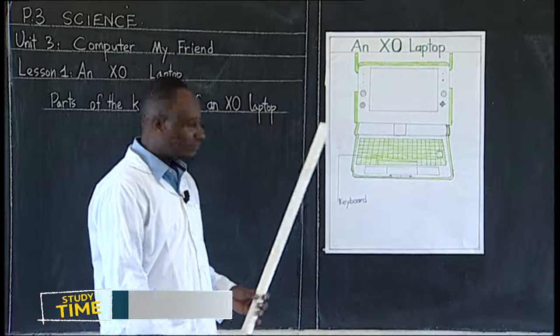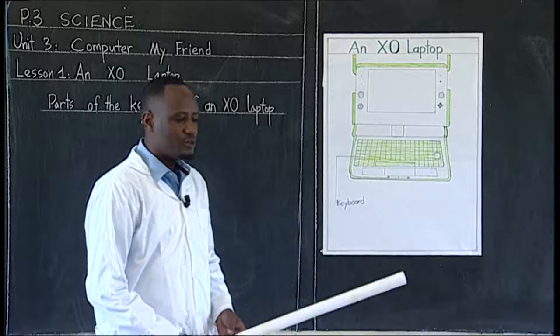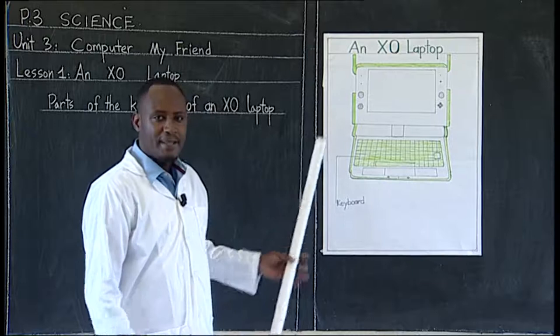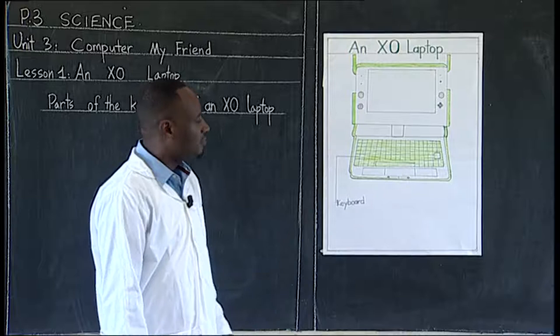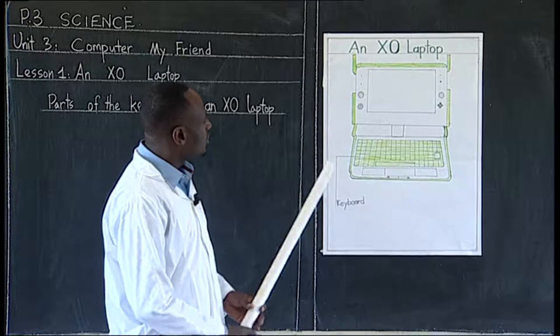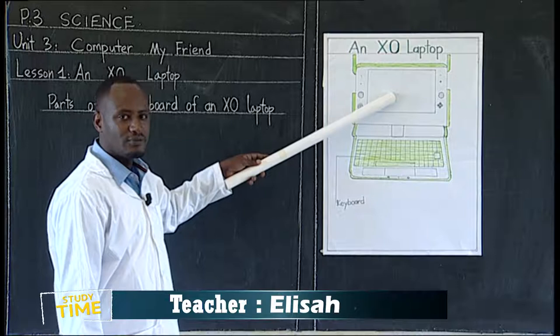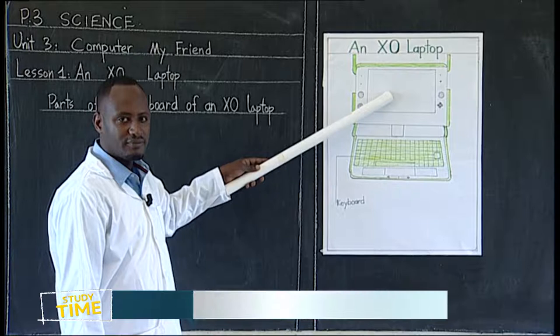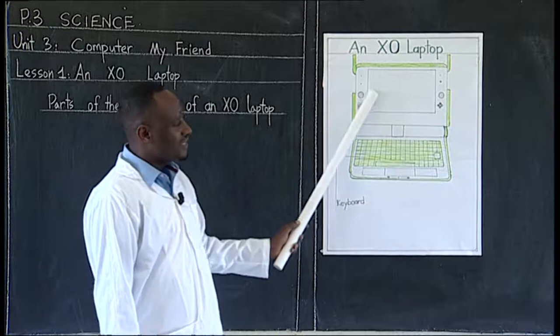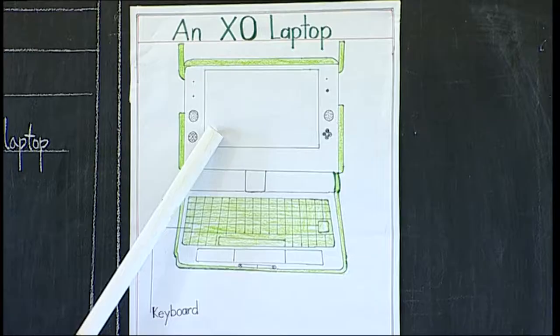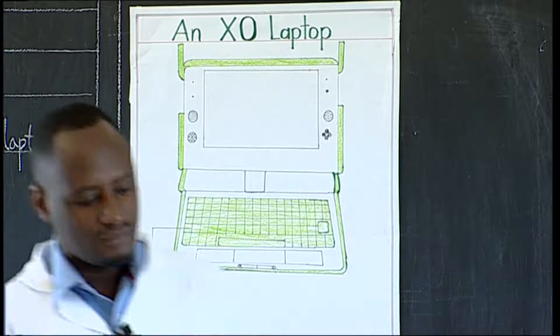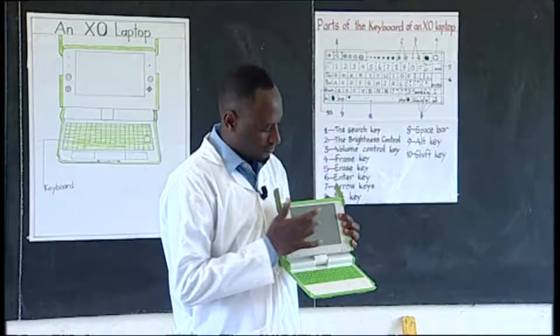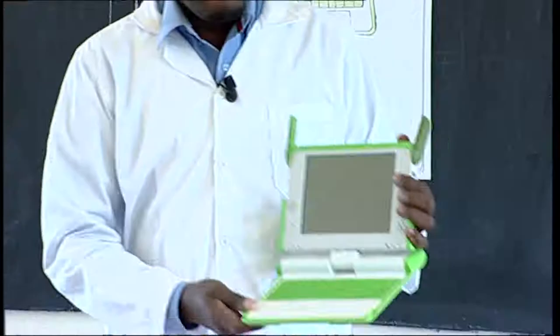This chart you are seeing here is a diagram showing an XO laptop, and it is not showing all the parts, but at least we can remind ourselves with the parts that are shown on the diagram. So, which part is this one? Who can tell me this part here? Yes, this is the screen. This is the screen. From here you can see the screen — this part here is the screen.